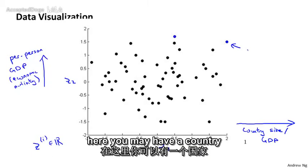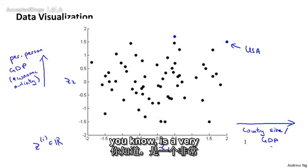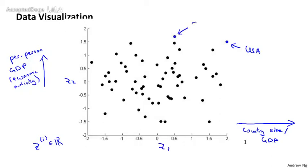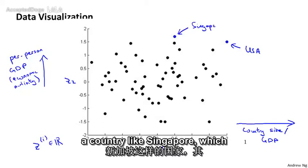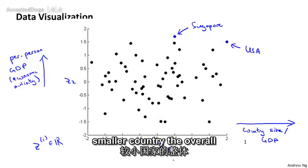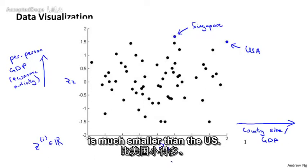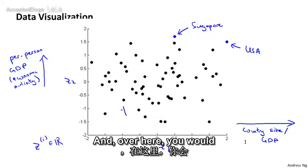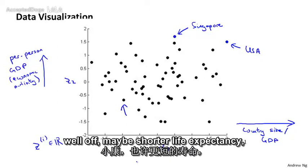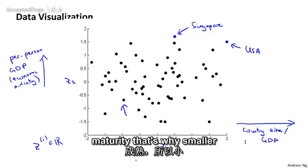Out here, you might have a country like the USA, which has a very large GDP and a relatively high per person GDP as well. Whereas here, you might have a country like Singapore, which actually has a very high per person GDP as well, but because Singapore is a much smaller country, the overall economy size of Singapore is much smaller than the US. And over here, you would have countries where individuals are, unfortunately, somewhat less well-off — maybe shorter life expectancy, less healthcare, less economic activity, as well as smaller countries.